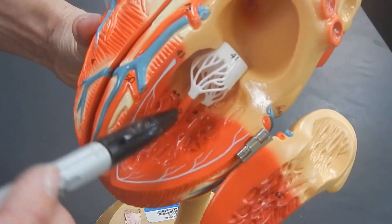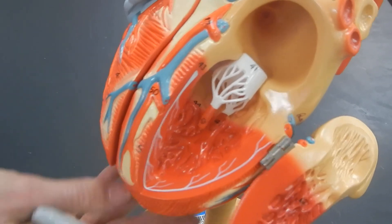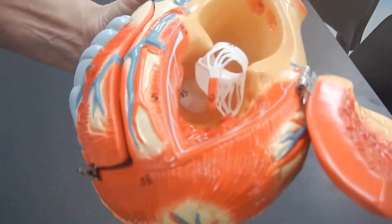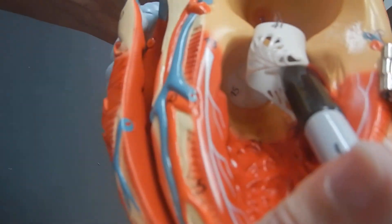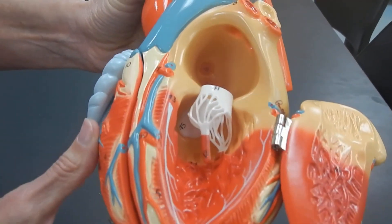The valve between the left ventricle and the aorta is difficult to see, but it's right there, number 45, and that is the aortic valve.